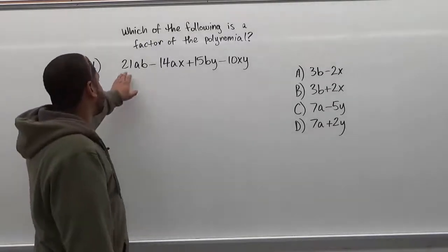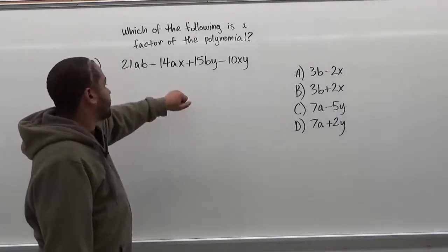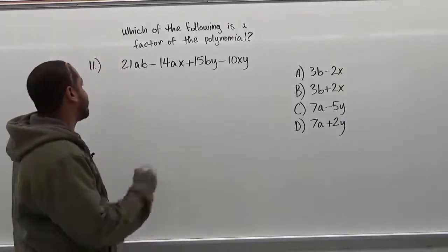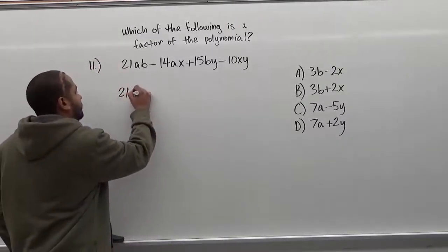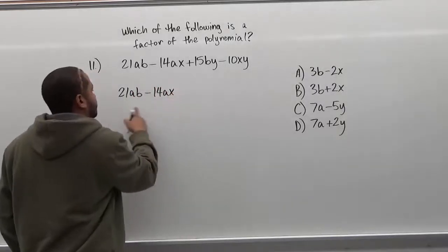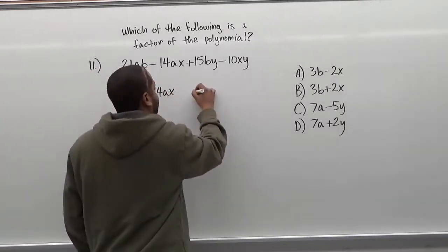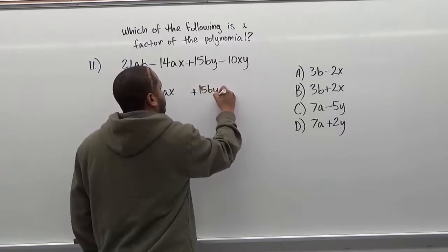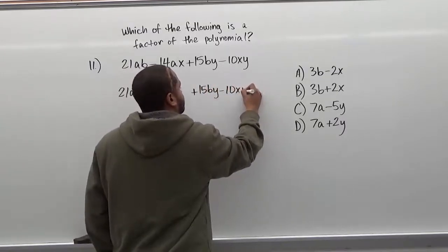Alright, so basically we're going to take the first two terms and group them together, take the second two terms and group them together. So we have 21ab, take away 14ax as the first group, the second group is positive 15by, take away 10xy's.